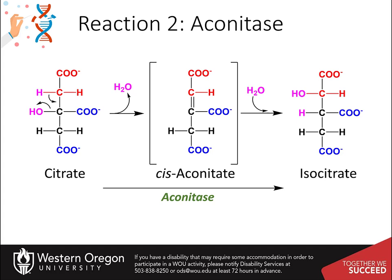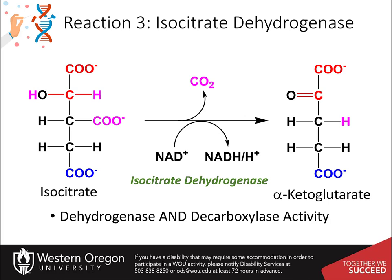Reaction 2 is the isomerization of citrate to isocitrate, mediated by an enzyme named aconitase. This is named for the cis-aconitate intermediate that forms during the reaction. On many Krebs cycle diagrams, the cis-aconitate is also shown. Thus, you must be careful when labeling a Krebs cycle diagram that this intermediate may or may not be shown.